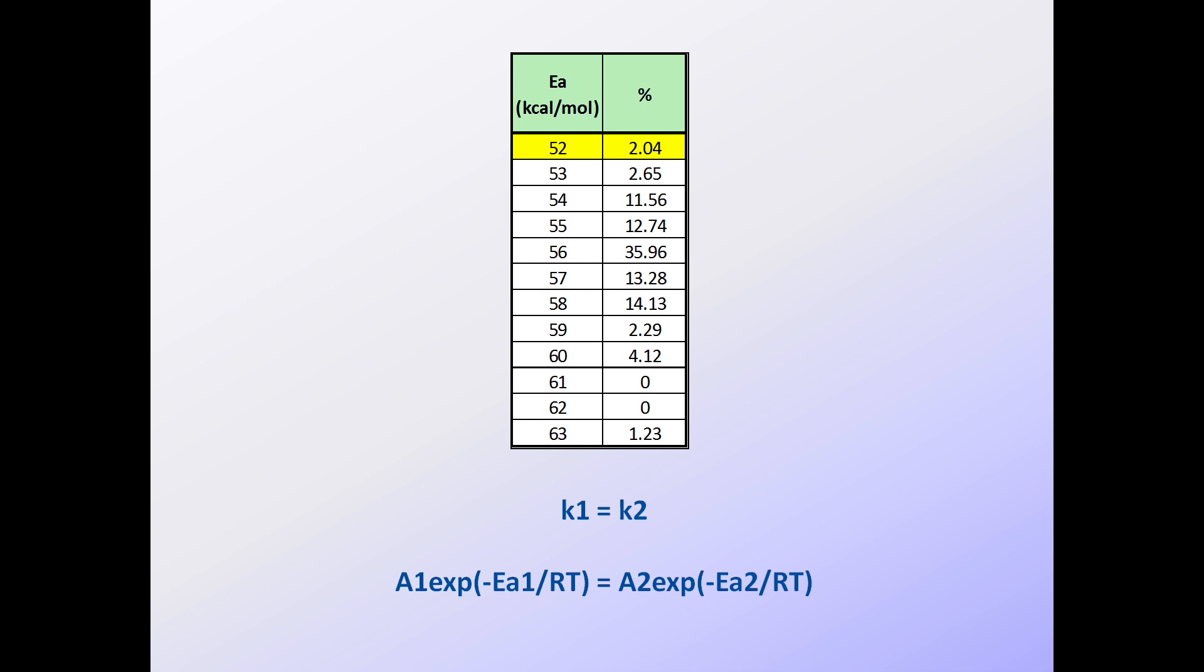The compensation effect tells us that K1 equals K2, and thus that the corresponding Arrhenius formulations must also be equal. It's important to recognize that the temperature T is the same in both cases because it's the same pyrolysis experiment. Only the methods of interpreting the pyrolysis data have changed.